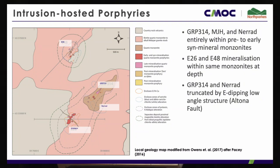The intrusion-hosted clan primarily includes GRP, E26, MJH and NERAD, as well as some material from E48 at depth. These are systems either entirely hosted within the early pre-mineral monzonite or that emanate through it at shallower depths, but at depth you can see the mineralisation associated with the pre-mineral monzonite complex. The tops of some ore shells have been truncated by a late low-angle structure that has dislocated them.